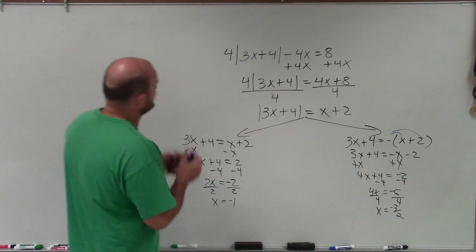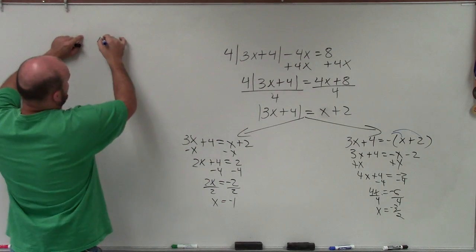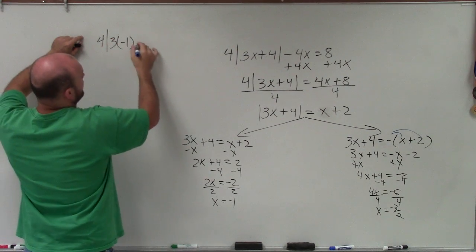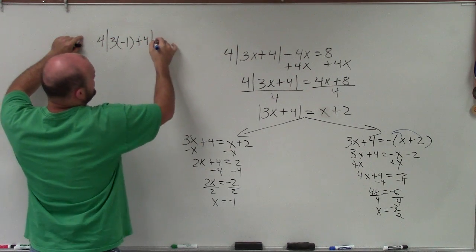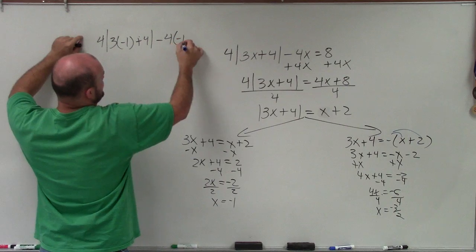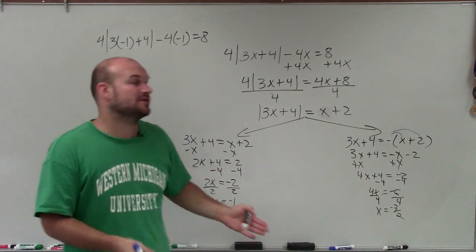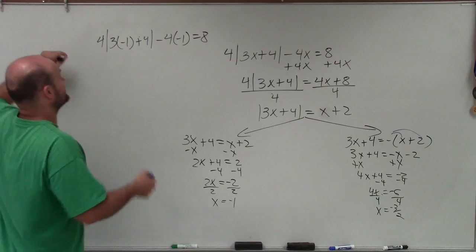So again, let's go ahead and plug in now to test each one of these solutions. I have 4 times 3 times negative 1 plus 4, absolute value, minus 4 times negative 1 equals 8, right? So you're going to take your value and plug it back into your equation and see if it works.